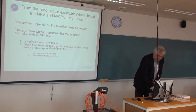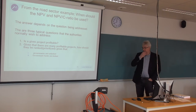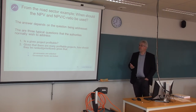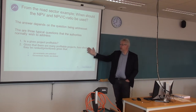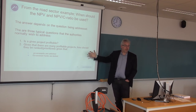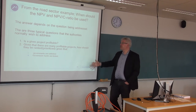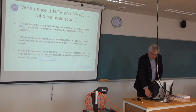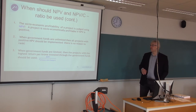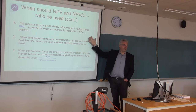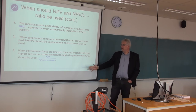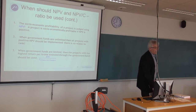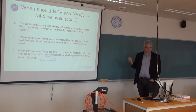Then you have the roads sector example, which I will not talk much about because you had a couple of exercises on it. But pay attention to the ranking criterion introduced here: if you have a binding constraint on the public budget, you use the benefit-cost ratio to rank projects. If you don't have constraints on public funds, you rank according to the net present value added to society. But if you have binding constraints, you rank according to a benefit-cost ratio, to see how much you get for the public money invested.